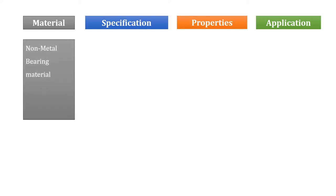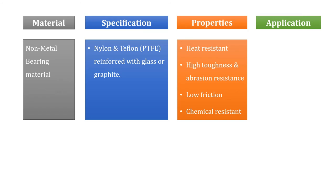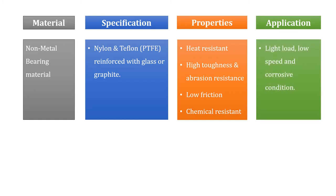The third type of bearing material is non-metal bearing materials, also known as nylon and Teflon. In this type, nylon or Teflon is reinforced with glass or graphite material to increase wear resistance. The properties include heat resistance, high toughness, abrasion resistance, low friction, and chemical resistance. Because of these properties it is used in light load, low speed, and corrosive conditions, as it is a chemical-resistant and heat-resistant material.